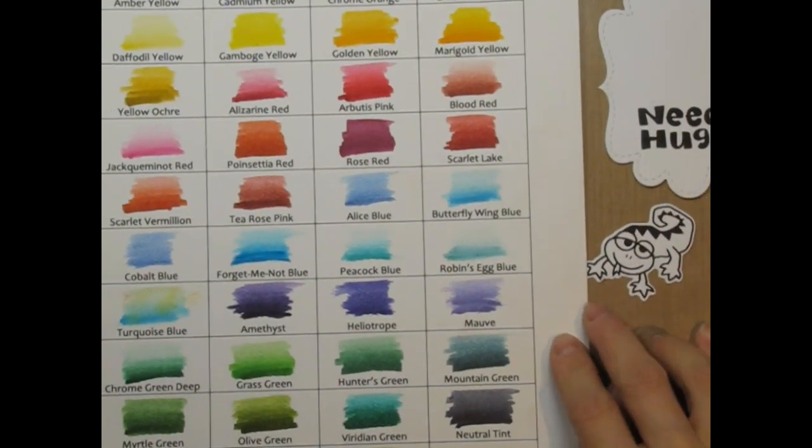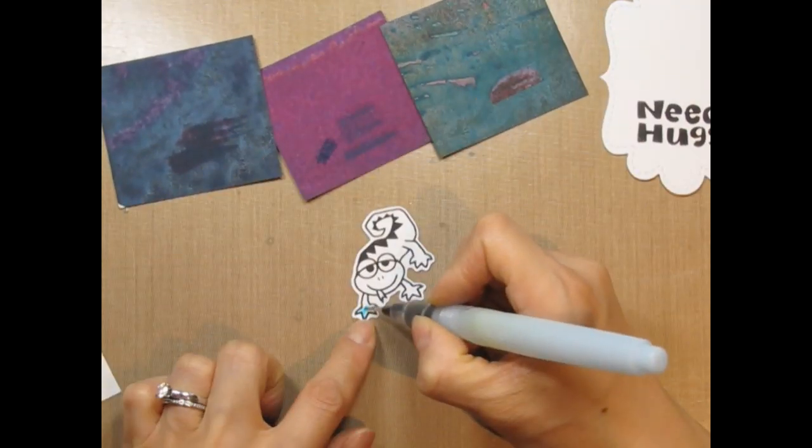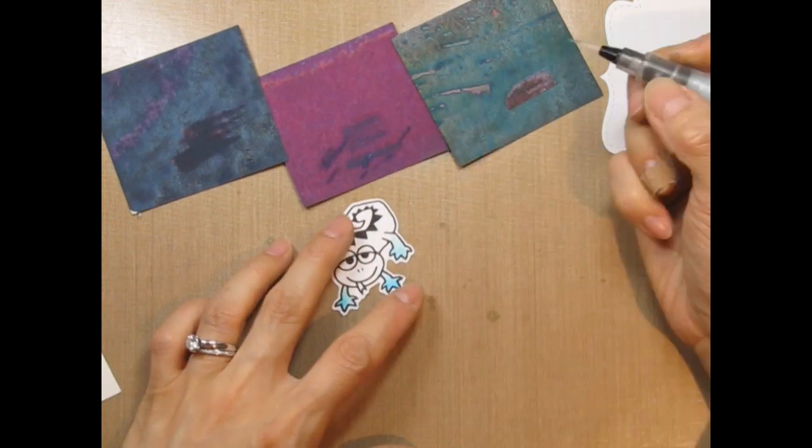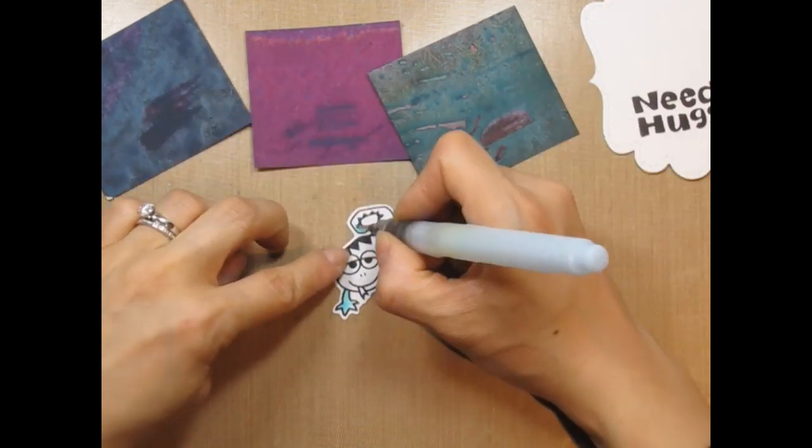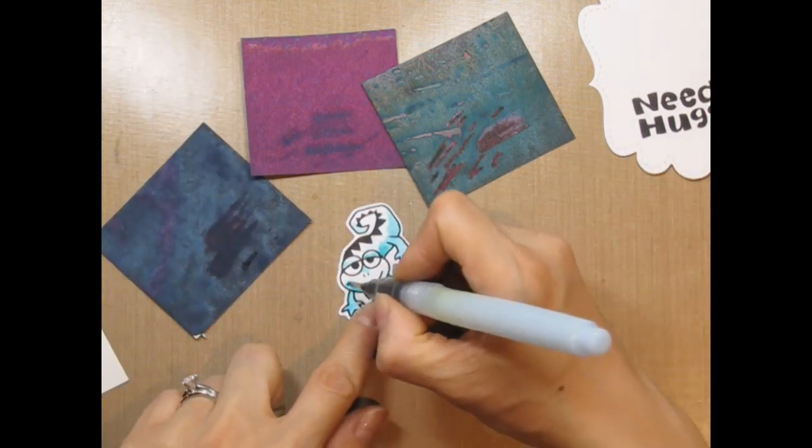To choose colors for watercoloring the Lizard, I'm using the color swatches I created in my previous video. I'm going to use Forget Me Not Blue, Peacock Blue, and Butterfly Wing Blue. I pick up alternating blues and add them to the Lizard without worrying about blending or splotching. After all, he's supposed to be scaly and the cardstock is textured anyway.